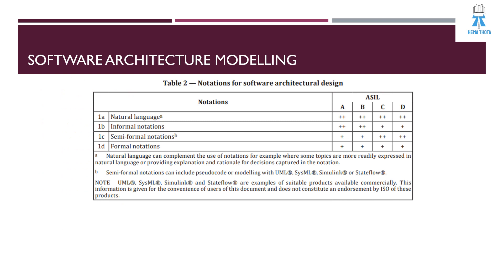Software architecture modeling refers to the notations used for software architecture design. Natural language is mandated for ASIL A, B, C, and D categories. Informal notation is mandated for A and B but recommended for C and D. Semi-formal notations are mandated for C and D but recommended for A and B. Formal notations are recommended for all ASIL levels. Natural language is a complement — an add-on to other notations, used where topics are readily expressed in English or to provide explanation and rationale for design decisions. Semi-formal notations include pseudocode, UML, SysML, Simulink, and Stateflow.